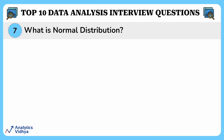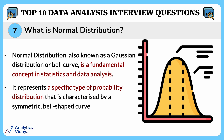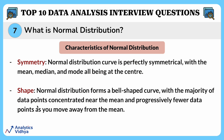This question asks what a normal distribution is. A normal distribution, also known as a Gaussian distribution or bell curve, is a fundamental concept in statistics and data analysis. It represents a specific type of probability distribution characterized by a symmetric bell-shaped curve. Its key characteristics include symmetry — the curve is perfectly symmetrical with the mean, median, and mode all at the center — and shape, with the majority of data points concentrated near the mean and progressively fewer as you move away.